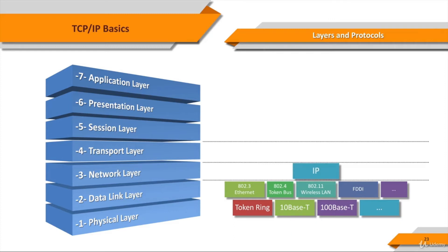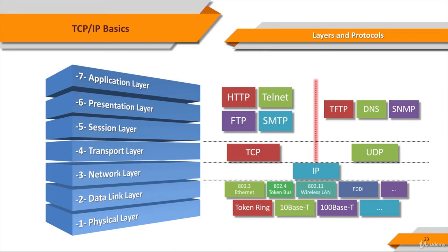IP, Internet Protocol, is responsible for addressing hosts, encapsulating data into transferred packets, and routing packets from a source host to a destination host across one or more IP networks. The best-known transport protocol is the Transmission Control Protocol, or TCP. It's used for connection-oriented transmissions, whereas the connectionless User Datagram Protocol, UDP, is used for simpler messaging transmissions. We're going to talk more in depth about these protocols in the next lecture. For ease of use, the last three layers — Session Layer, Presentation Layer, and Application Layer — are thought of together as the Application Layer.